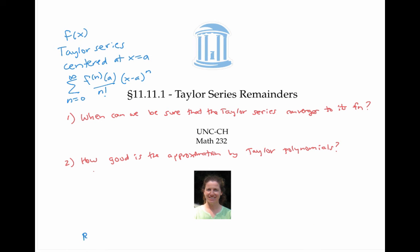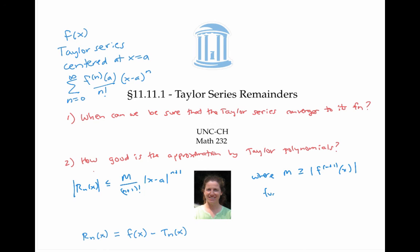In this video, we defined the nth remainder for a Taylor series as the difference between the function and its nth Taylor polynomial. We also gave a bound on the size of the nth remainder — it's always less than or equal to M over n plus one factorial times the absolute value of x minus a to the n plus one, where M is a bound on the size of the n plus one derivative of f at x for x within some distance d of a. Because of this formula for the nth remainder, known as Taylor's inequality, we can show that if the nth derivative of f at x is always bounded by the same M for all x within a certain interval around a, and for all values of n, then the Taylor series converges to its function.